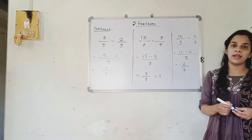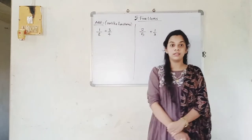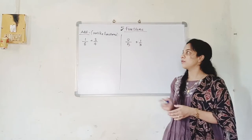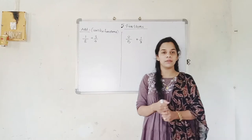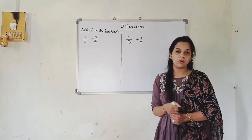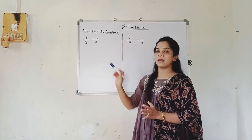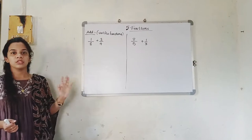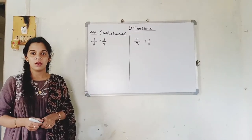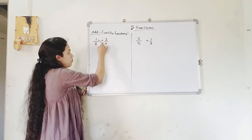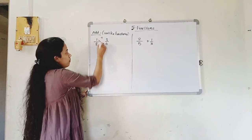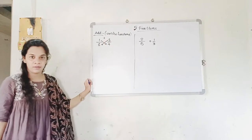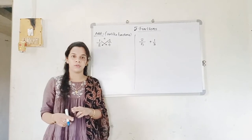Now we are going to see the addition and subtraction of unlike fractions. Unlike fractions, as per definition, are those whose denominators are not the same. You can see 8 and 4 — they are different, so these are unlike fractions. To add them, we are going to use cross multiplication. Cross multiplication means you multiply 1 with 4 and 3 with 8.